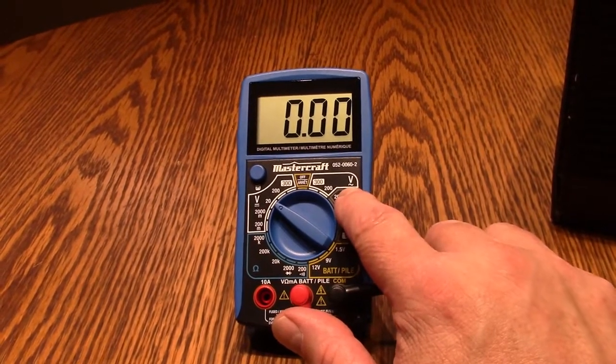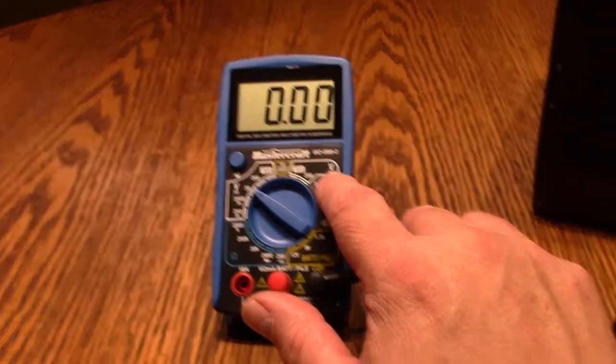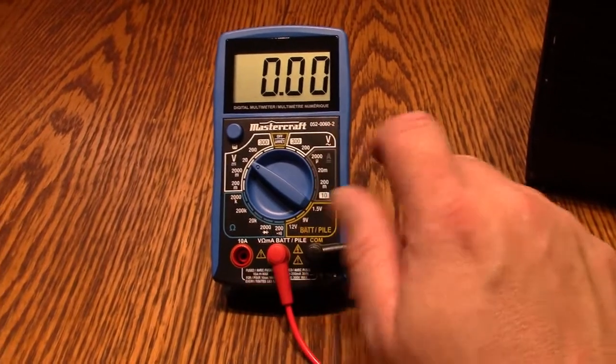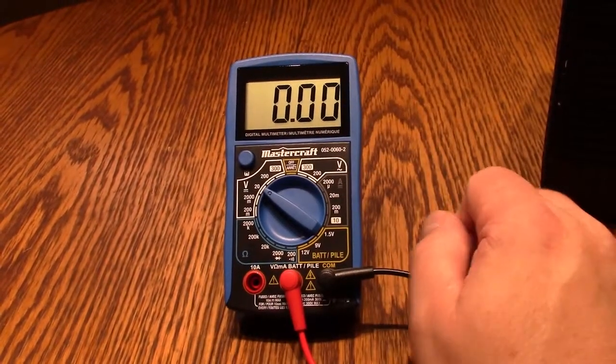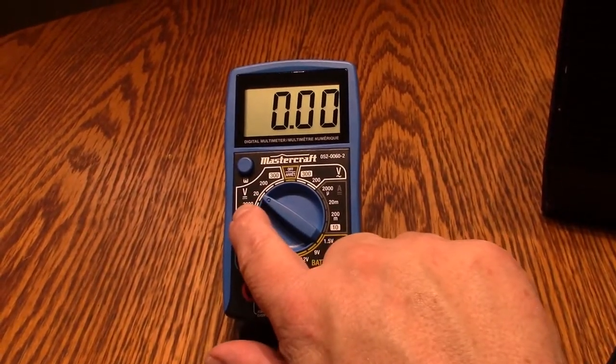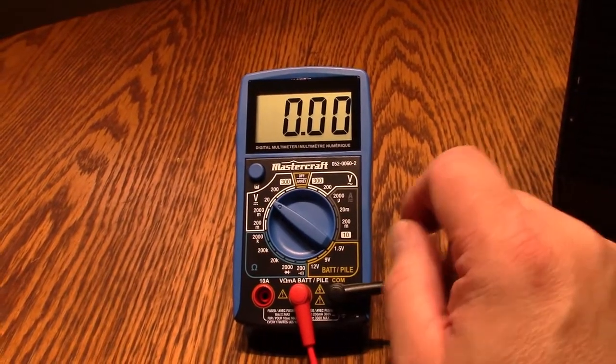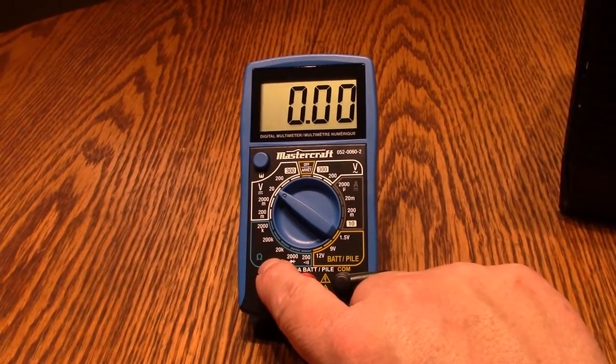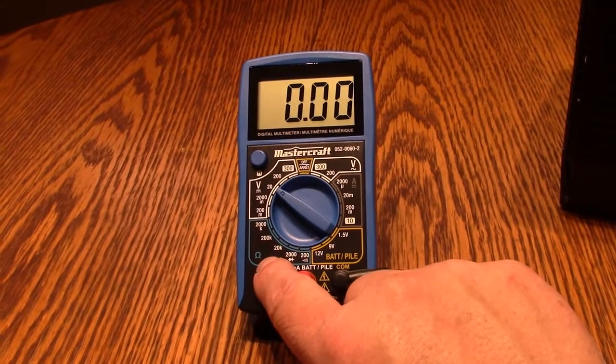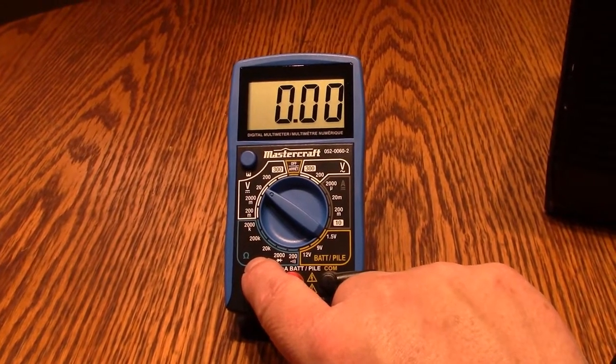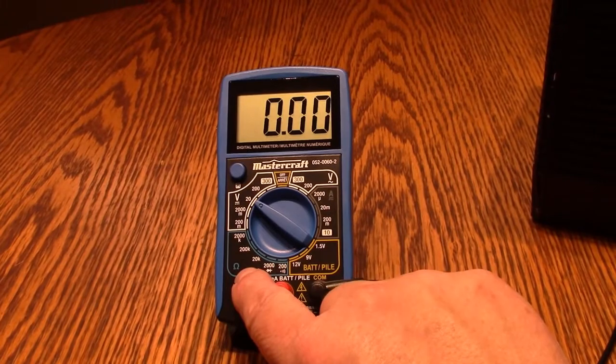Over here, you'll notice the V with the squiggly line. This is for AC voltage that you would find in your home. We're not going to use that, but we're going to be focusing on the DC voltage as well as resistance and the concept of continuity, which will help us check a variety of devices on our bikes.